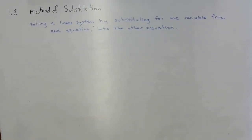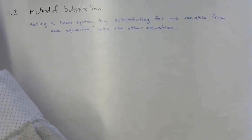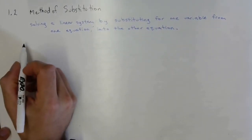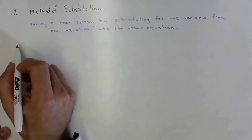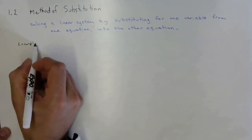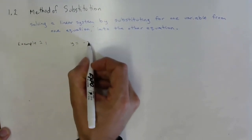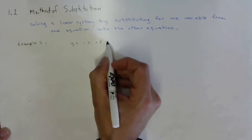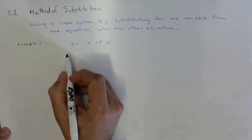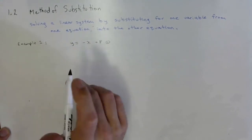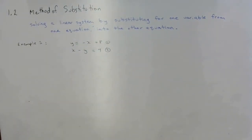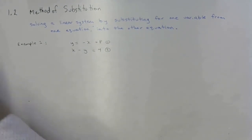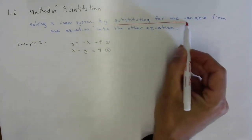That might sound a little abstract at the beginning but it's going to make a lot of sense as we move along. In a linear system you have two linear equations and you want to solve it — you want to find the point of intersection. We're going to go through it in Example 1.